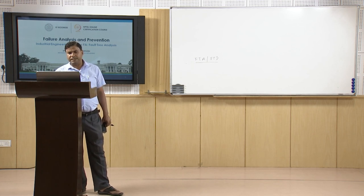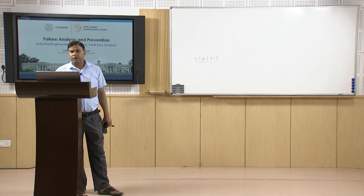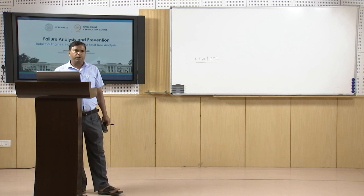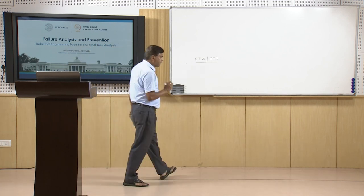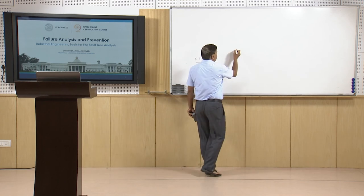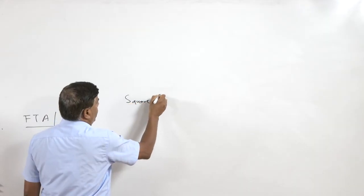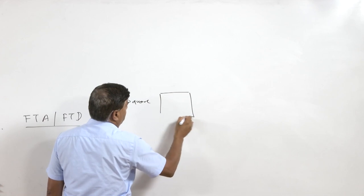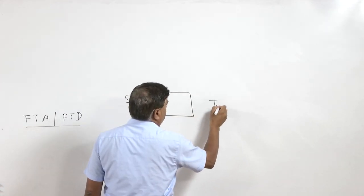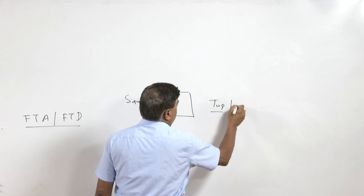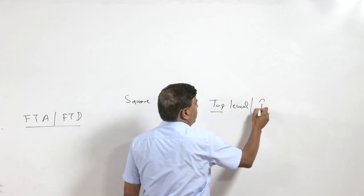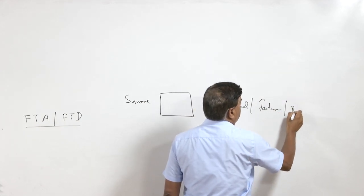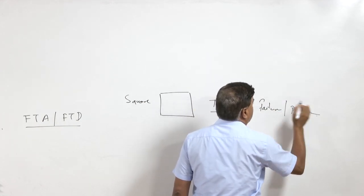When FTA is carried out, it leads to the causes of failure, and based on that, solutions can be developed to avoid failures in service. The fault tree diagram uses certain standard symbols. One is the square symbol, which is used to define the top-level failure or the problem which is to be addressed.